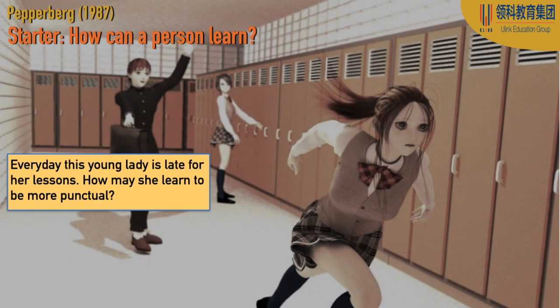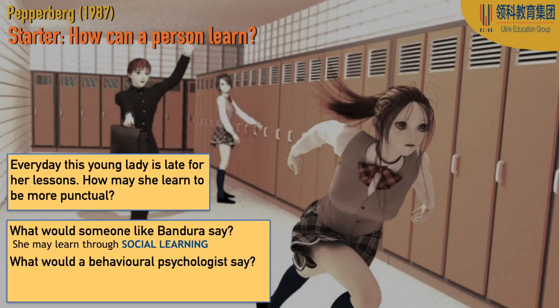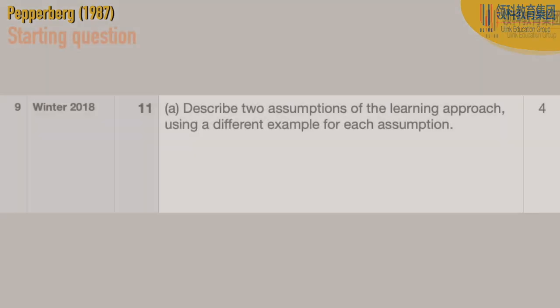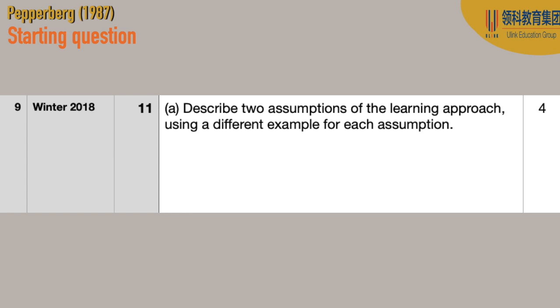Hopefully by this point in the semester, most of you have a grasp for the difference between operant conditioning and classical conditioning. In schools, we tend to use more operant conditioning because classical conditioning is more of a biological association, and it's almost impossible to inflict learning onto students by using biological means. Keep in mind that you will likely be asked on one of these exams to describe assumptions of one of the four approaches.